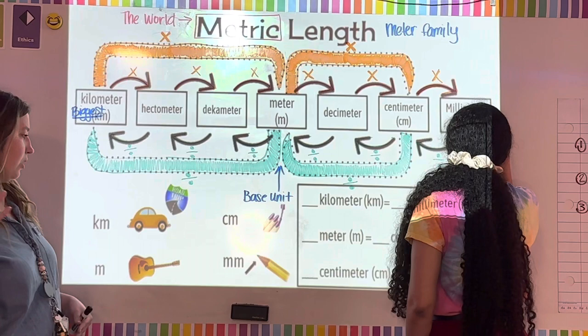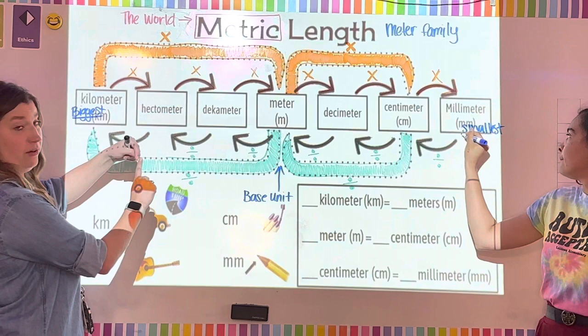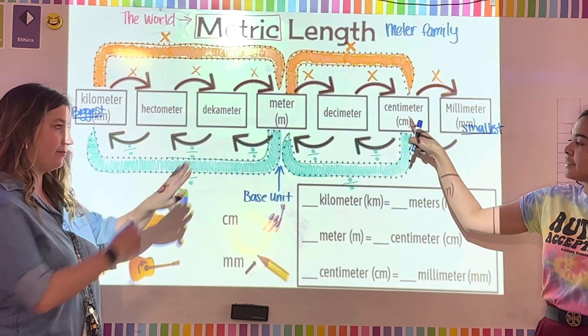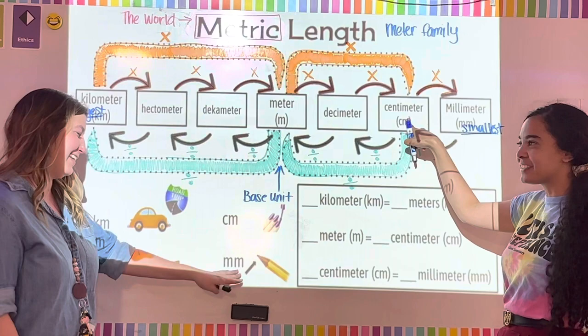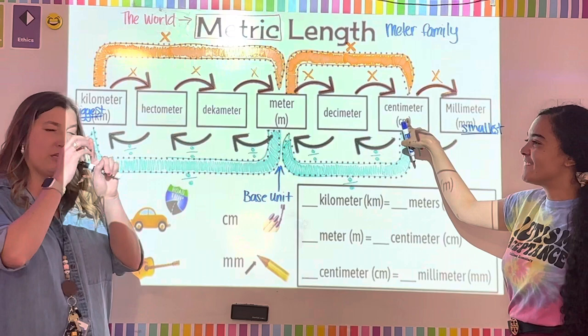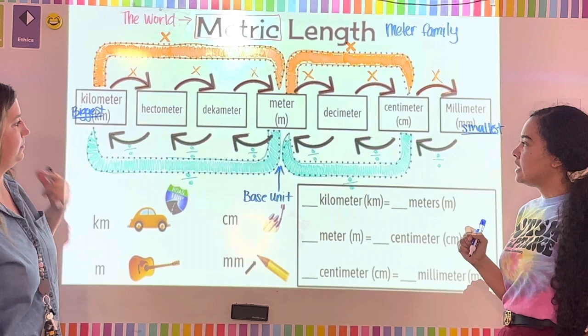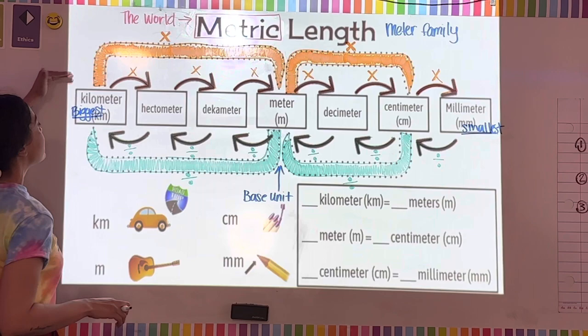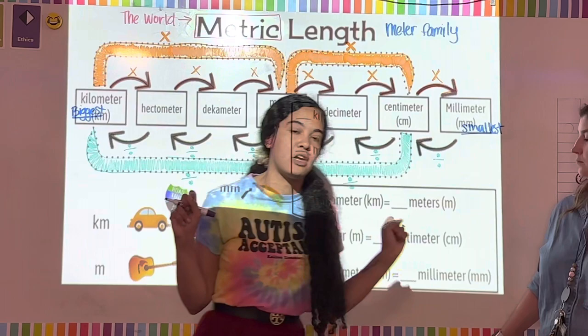Our base unit is meters, which is about as long as a guitar. Centimeters would be like the length across your fingernail. Millimeters would be the point of your pencil — if you have a sharp pencil, the point of it would be millimeters, which is the smallest unit. Go ahead and label your smallest.